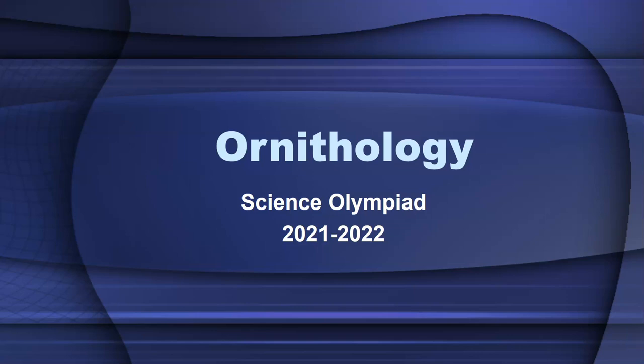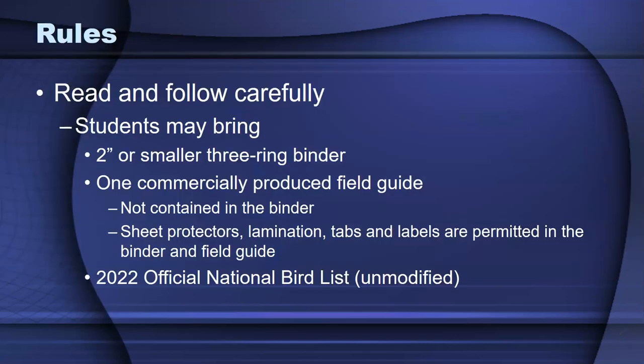This recording is about Ornithology for Science Olympiad. Read and carefully follow the rules, specifically about what students can bring in with them. They can bring a two-inch or smaller three-ring binder with information in it. They can bring a commercially produced field guide, but that's not to be contained in the binder. The binder and the field guide can have tabs and labels.